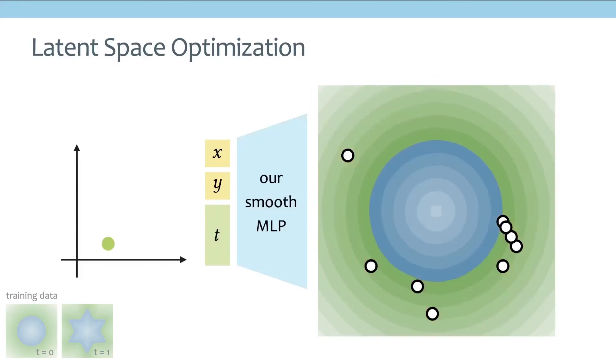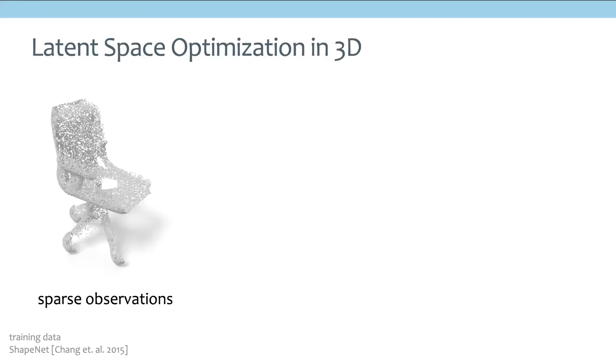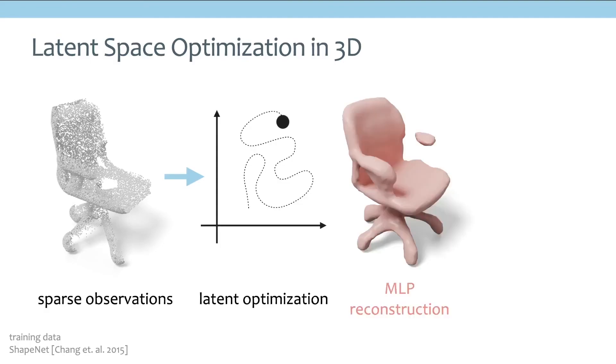But if we use our method where the latent space is smoother, then we can successfully do this latent space optimization without suffering from a terrible local minimum. And the same story also holds in 3D, where we have some sparse observations of a 3D scan of a chair, and we run latent space optimization. If we use standard MLP, this is the reconstruction you will obtain. But if we use our method, we can find a better latent code, which gives us a prettier chair compared to the MLP reconstruction.